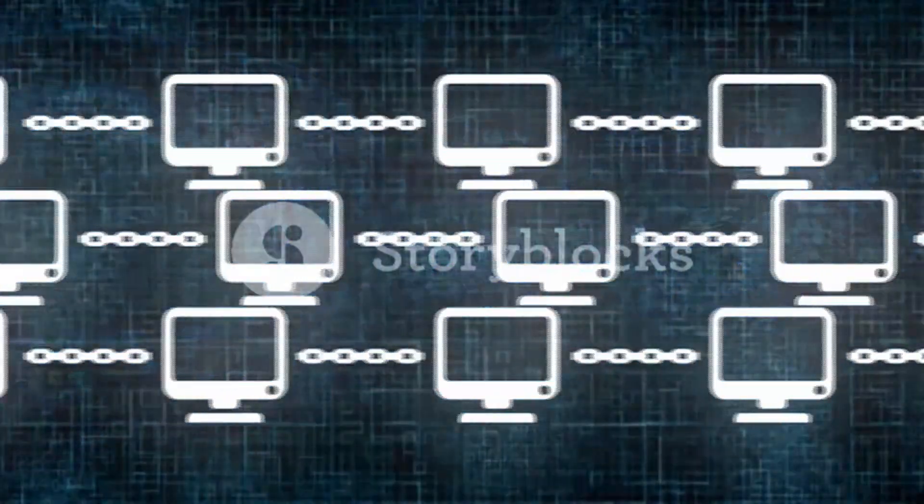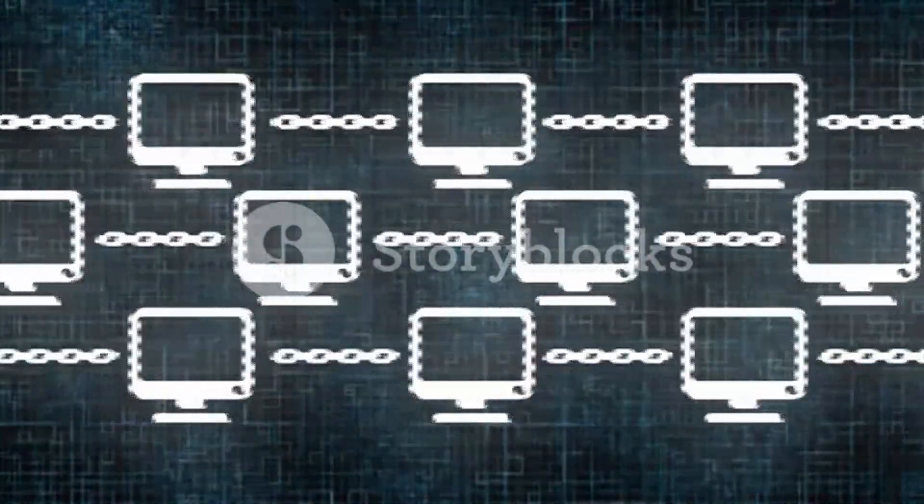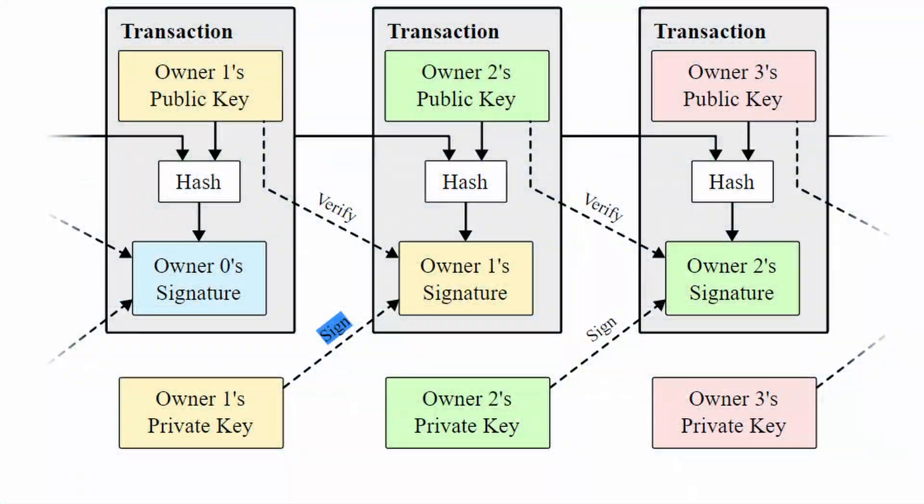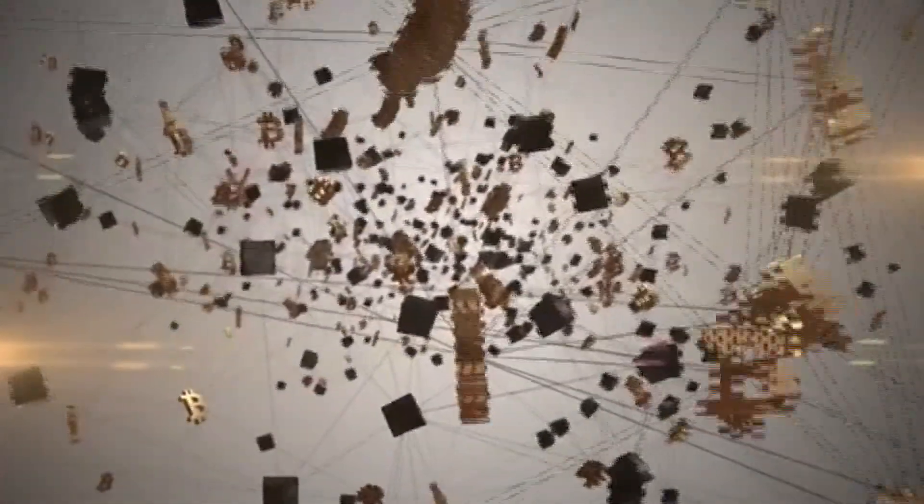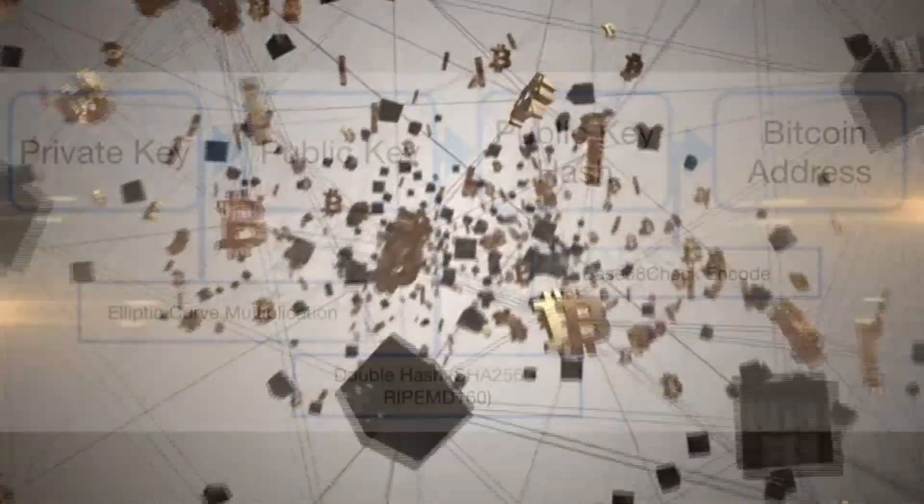In the blockchain, bitcoins are registered to the bitcoin address. Creating a bitcoin address requires nothing more than picking a random valid private key and computing the corresponding bitcoin address. This computation can be done in a split second, but the reverse—computing the private key of a given bitcoin address—is practically infeasible.